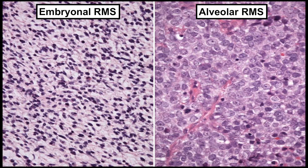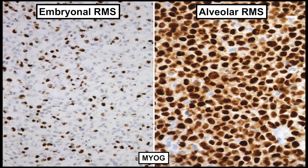embryonal rhabdomyosarcoma often shows some heterogeneity of the nuclei — small rounded nuclei, small spindled nuclei, with just a slight variation in size and shape, and there's often some myxoid stroma in embryonal rhabdomyosarcomas.